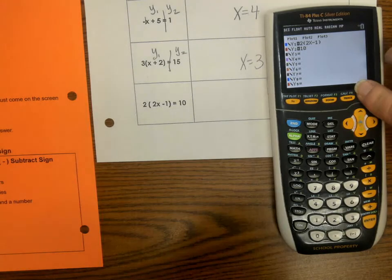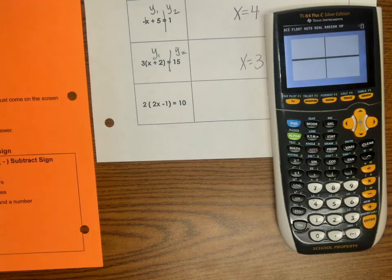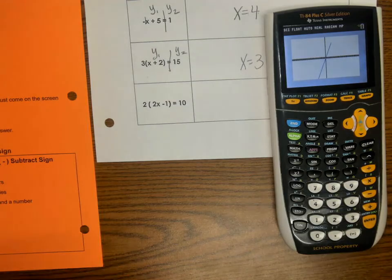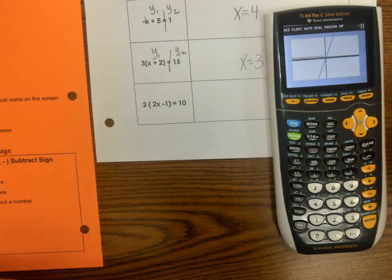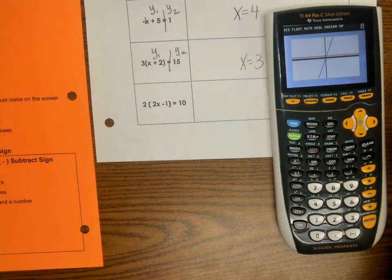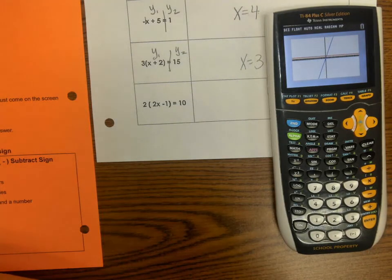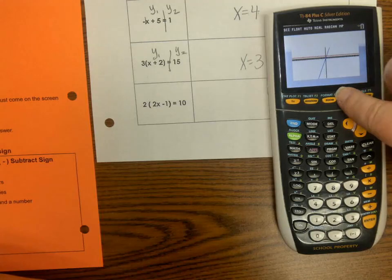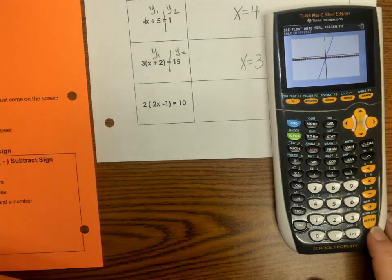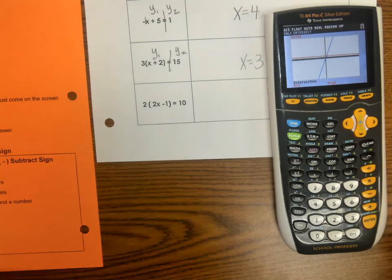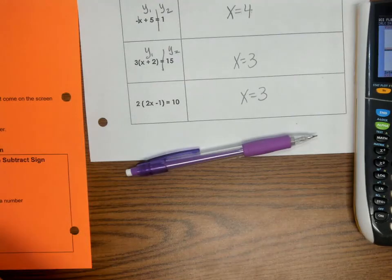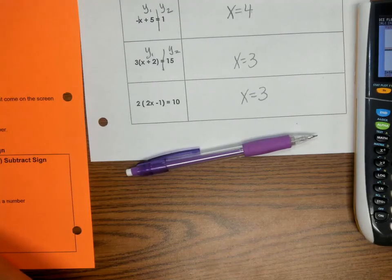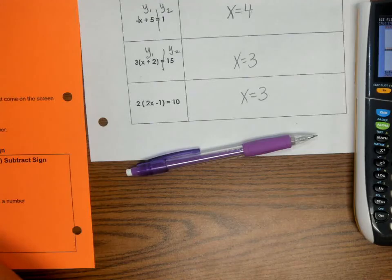Wait for your two lines. There's the second one coming. Then we are going to do second, trace, 5, enter, enter, enter. And it says the intersection is X equals 3. It looks like we got a lot of the same answers, didn't we? Get your paper at the back and get your practice. Make sure you finish it, complete it, and turn it in for a grade. Bye.